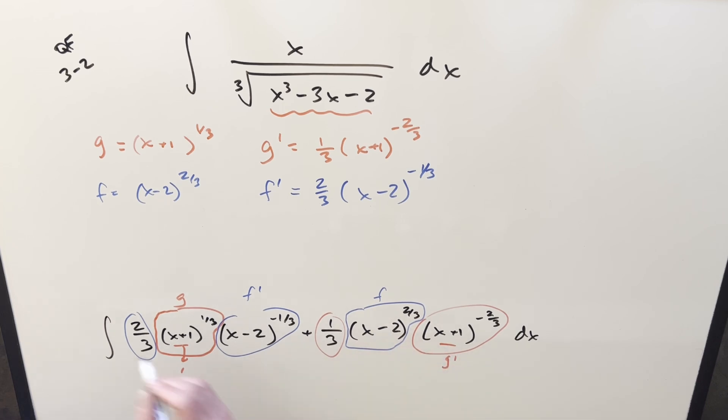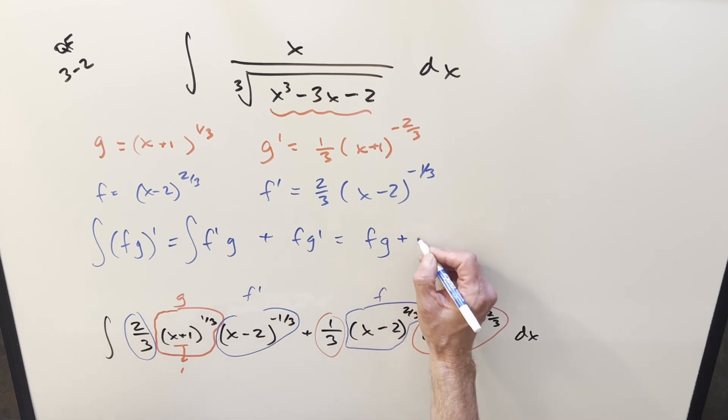So what we have here is the product rule. If you look at the product rule, writing it as fg, when we take that derivative, we get f prime g plus fg prime. Exactly what we have here, same format. This thing is within an integral. Okay, so we've got the product rule within an integral in this form. When you do that, it's going to reverse the derivative, and the solution is going to be in the form. And so our solution is just going to be f times g plus c.